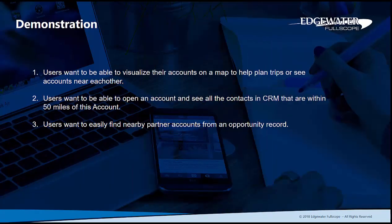I'll cover three use cases during this demonstration. Users will have the ability to visualize their accounts on a map to help plan trips or see accounts near each other. Users will have the ability to open an account record and see all contacts within a 50-mile radius. And they can easily find nearby partner account records when on an opportunity record.